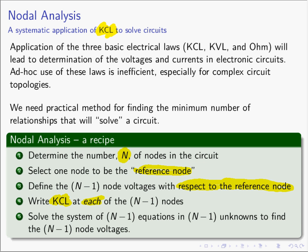Step five: you now have n minus 1 KCL equations in terms of n minus 1 unknowns — the node voltages. Simply solve the system of equations using any method from your math courses: inverse matrices, back substitution, Cramer's rule. Cramer's rule is really, really useful. All right, let's jump in and do an example.